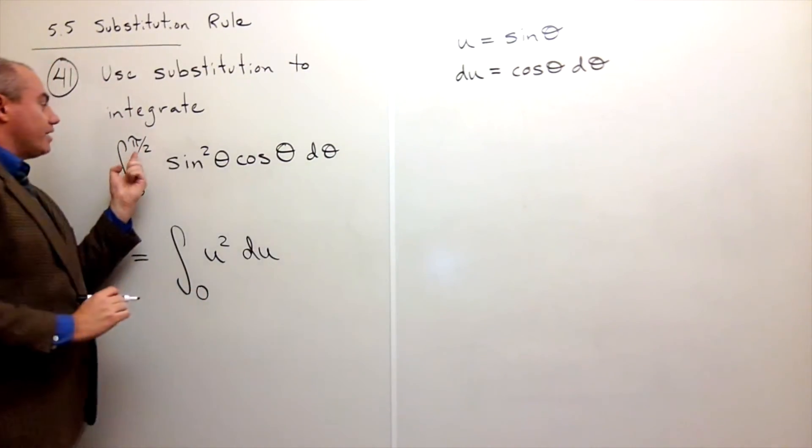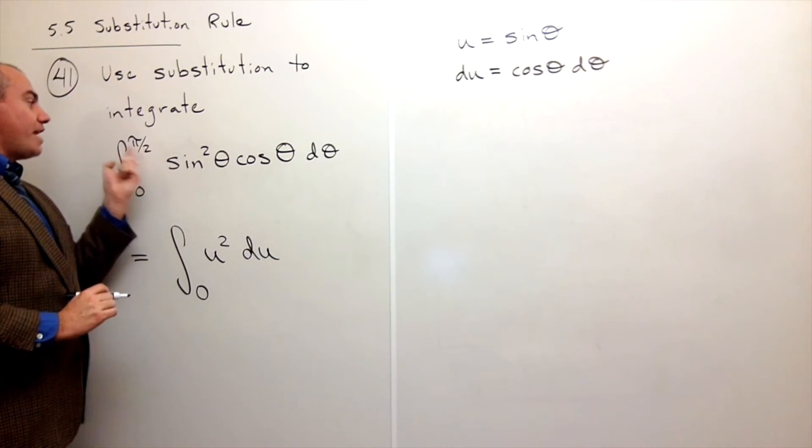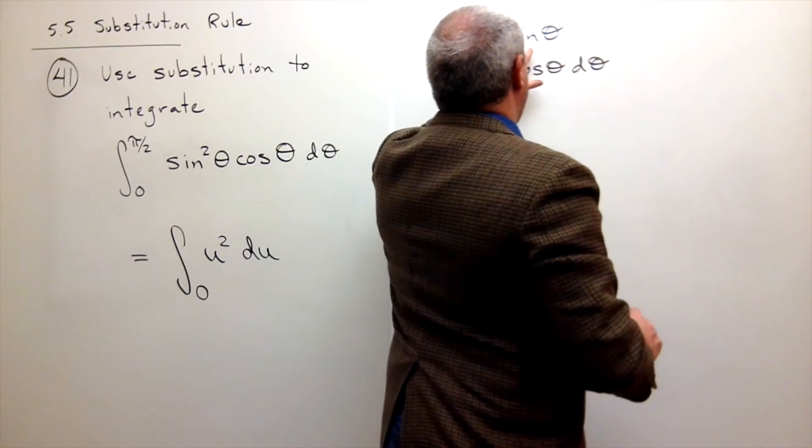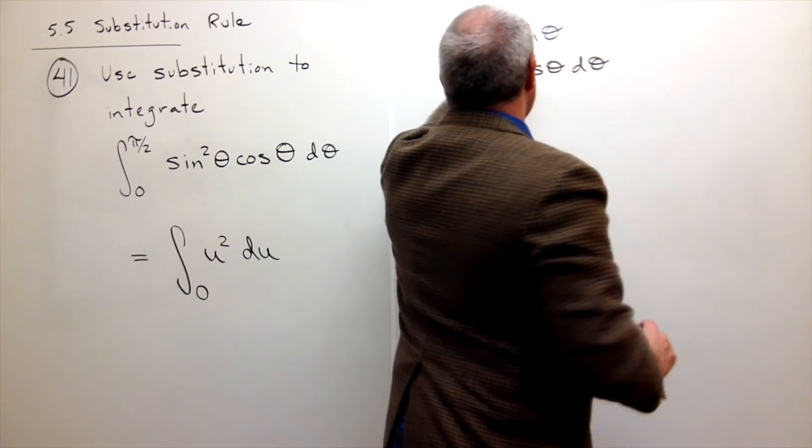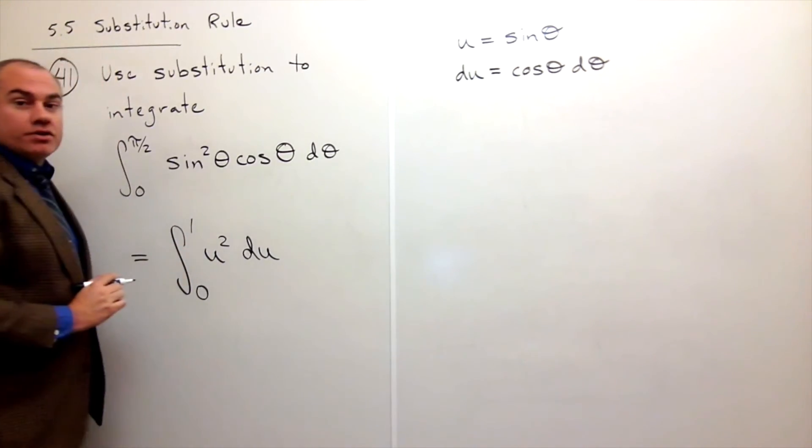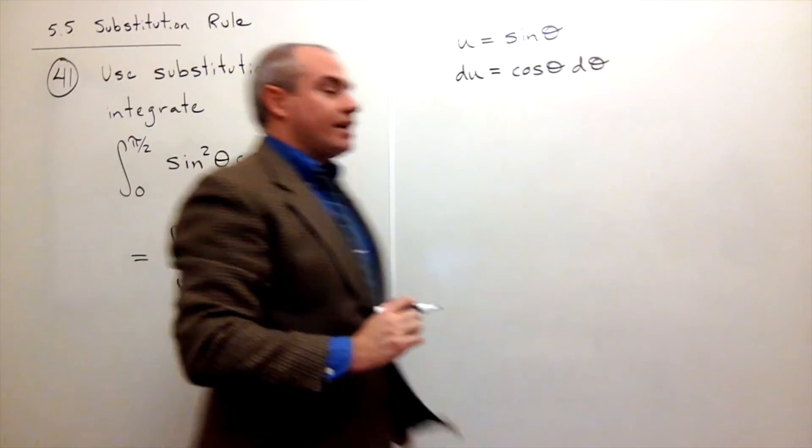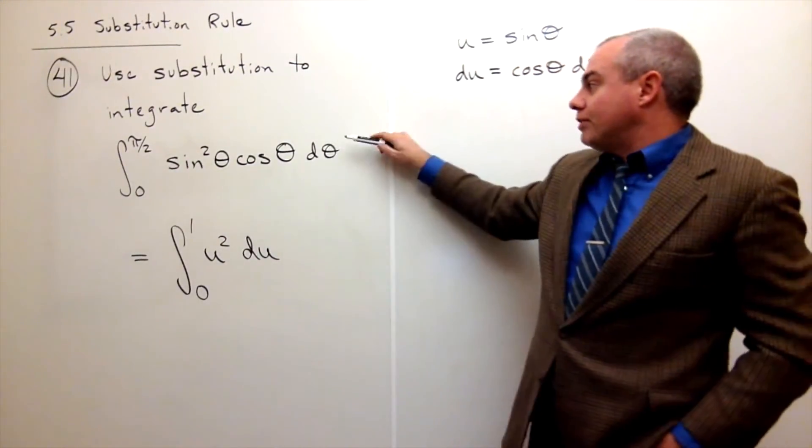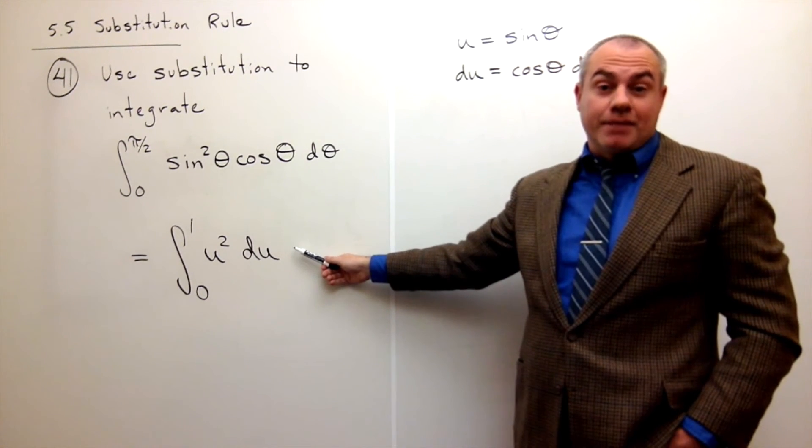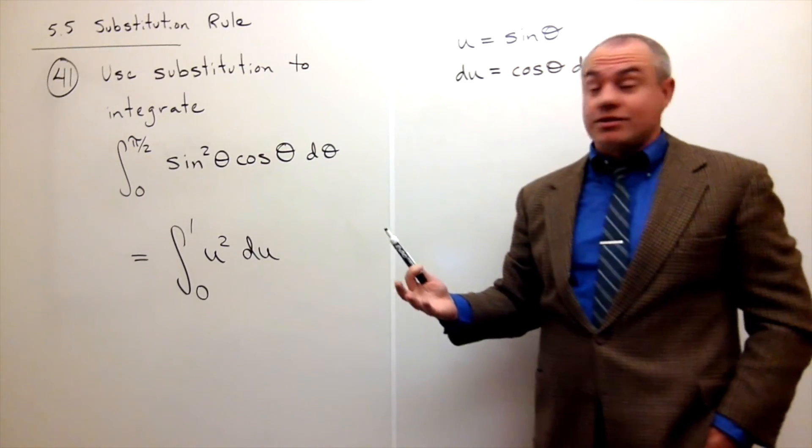And where does it end? At pi over two. Theta is pi over two. Well theta is pi over two. Sine of pi over two is one. So I integrate this from zero to one. So now I've taken something that looks quite complicated here and reduced it down to something that is relatively simple. And that's the whole idea behind substitution.